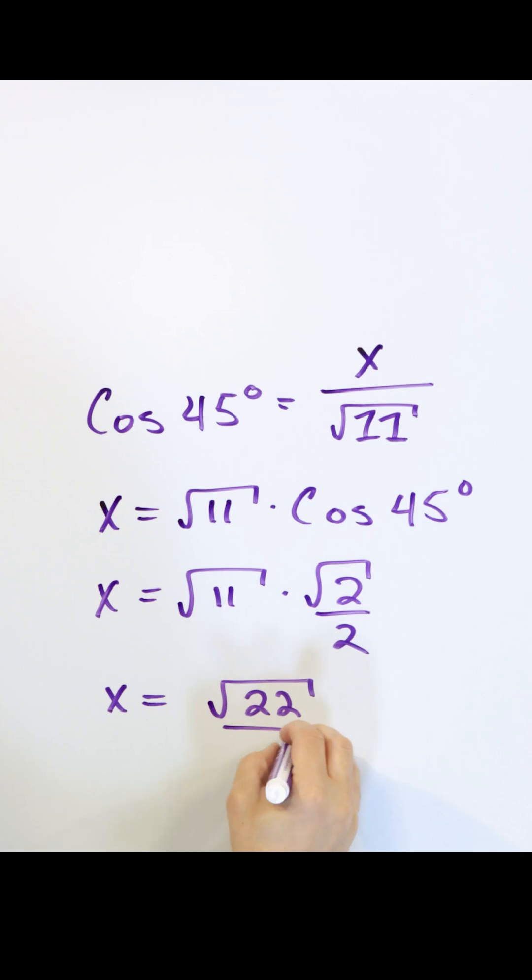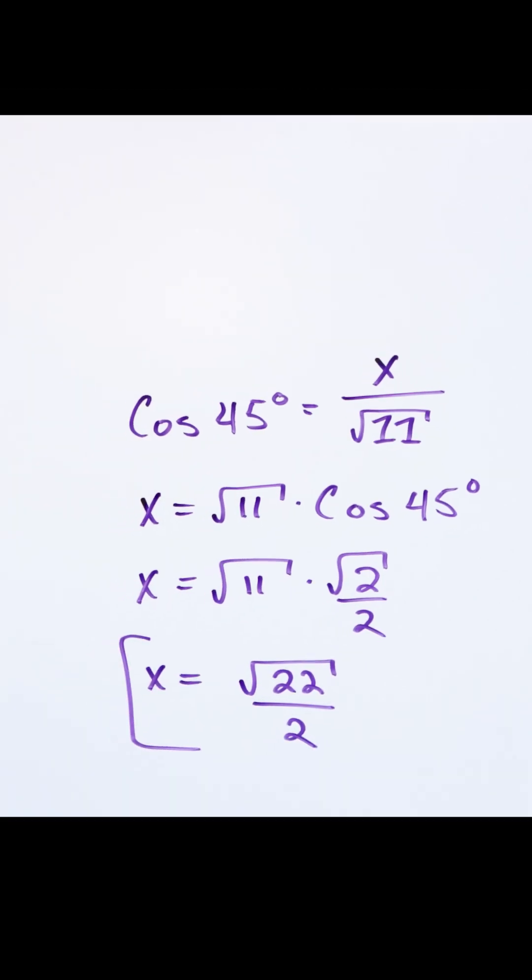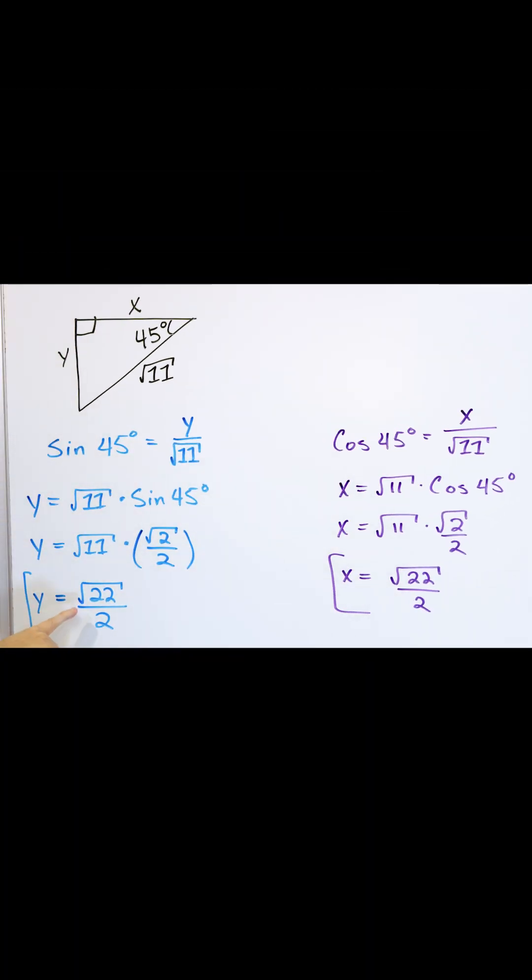Multiply the radicals, 22 over 2. What we've basically found, the x and y sides are the same number. You dump it in the calculator, you're going to get some number out of it. And it's exactly the same thing for y as it is for x.